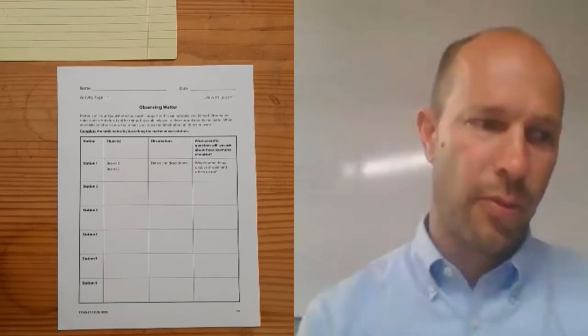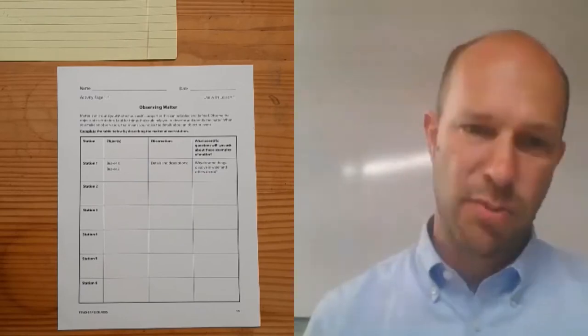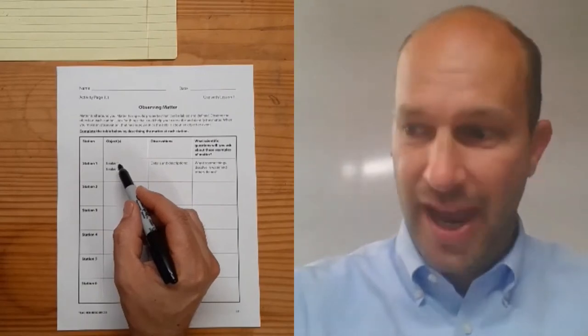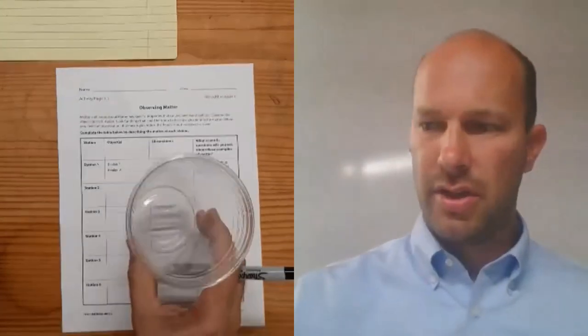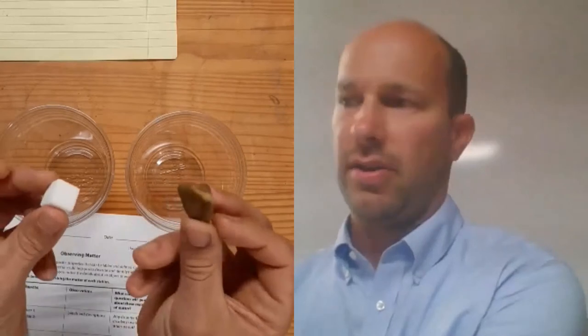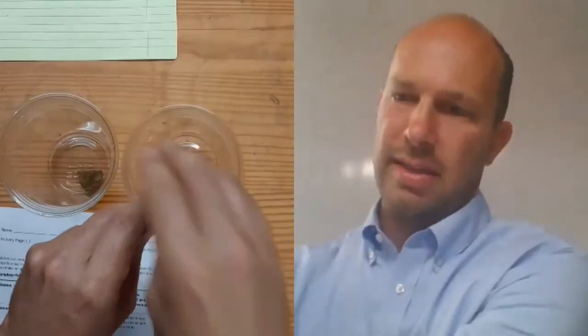So we're only going to focus today on things that are properties of matter that don't ever change. So let's talk about the first one together, and we'll make some observations together. So normally we would have stations when we were doing this activity. We're not going to have stations exactly. I'm just going to work through it with you. So I don't have beakers at my house, so we're going to improvise. Instead of beakers, I have plastic cups. So here is a plastic cup, and here is a second plastic cup.